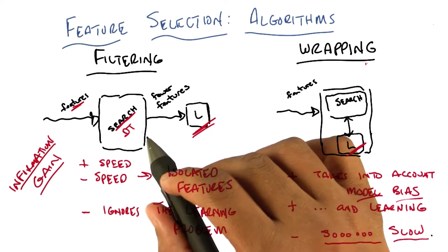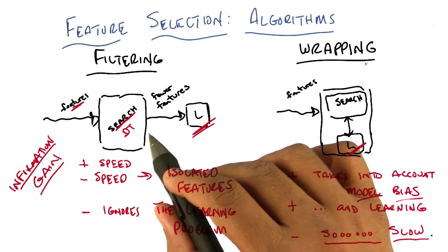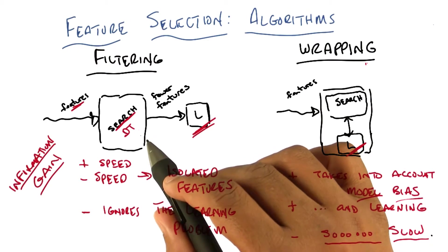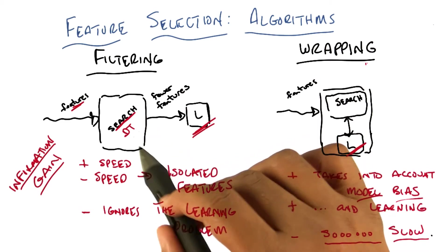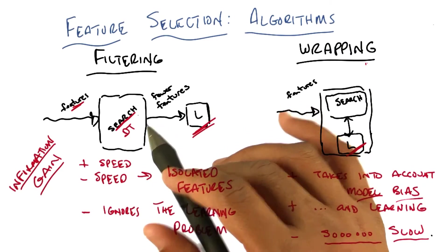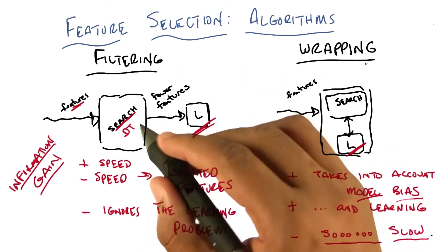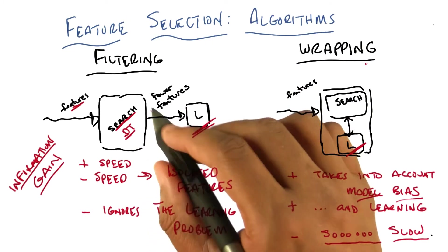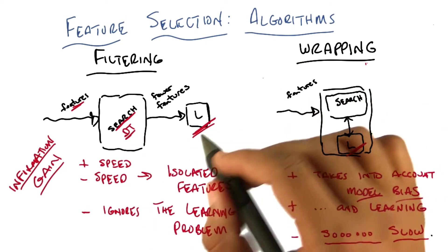Because maybe the decision tree doesn't do as good a job as you would like on noisy data, for example. Or you're just going to run the decision tree to some depth. Or even what you want to do is you're going to run the decision tree until it actually overfits. And now you know all the features that you could use, and you pass that on to some other learner, which has a different bias. So basically you use the inductive bias of the decision tree to choose features, but then you use the inductive bias of your other learner in order to do learning. Neat.